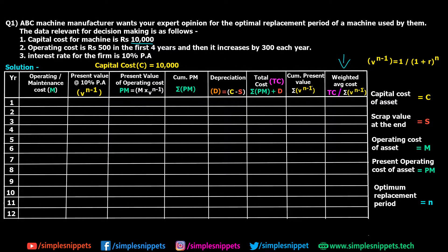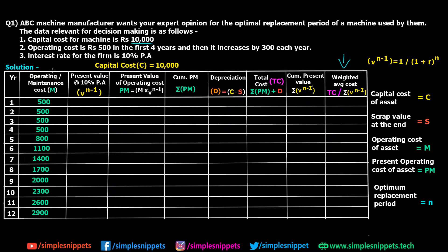Let's fill out the operating maintenance cost column. Operating cost is 500 rupees for the first four years, then increases by 300 each year: year 5 is 800, year 6 is 1100, and so on. I recommend drawing the full table and solving along. I've now calculated all operating maintenance cost values for the first column.